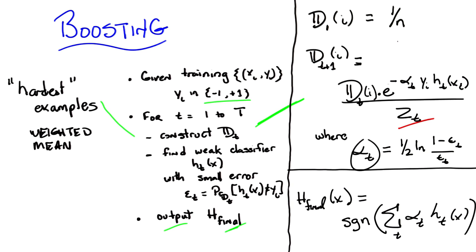And then you pass it through a thresholding function, where if it's below zero you say negative, and if it's above zero you say positive, and if it's zero then you just throw up your hands and return a zero. In other words, you return literally the sign of the number.